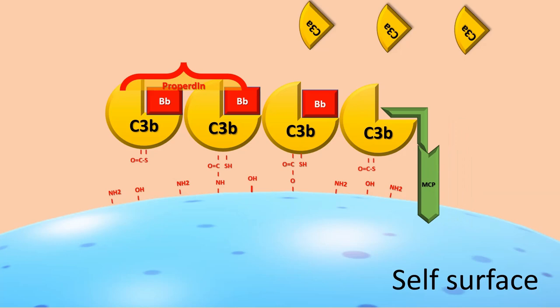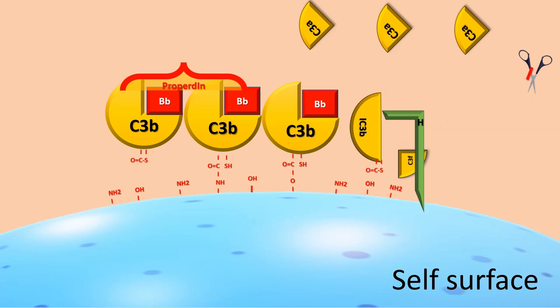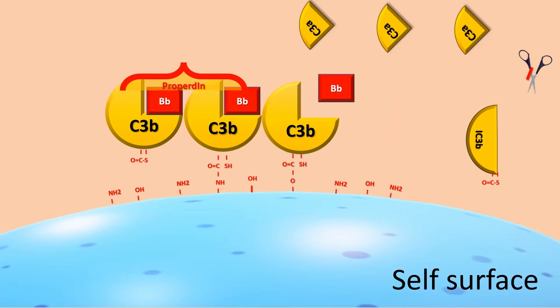C3C, C3B, C4B, and IC3B are opsonins for phagocytic cells. C3DG bounded to the antigen serves to activation through complement receptor 2, known also as CD21, of B-cells which bind the antigen and also for caption by follicular dendritic cells to present the antigen to B-cells in the germinal centers of lymphoid organs.